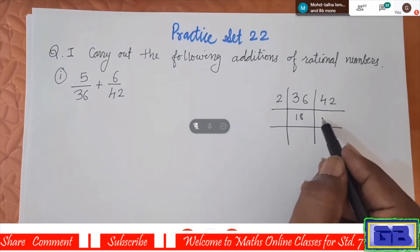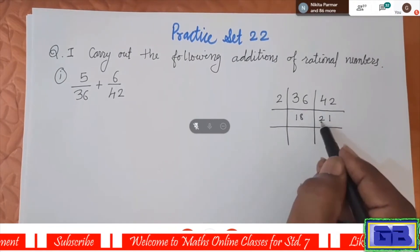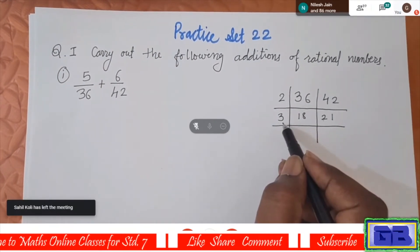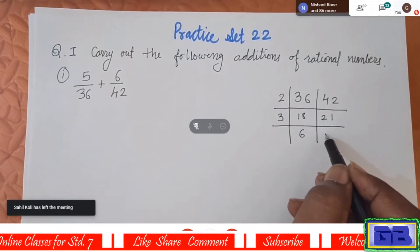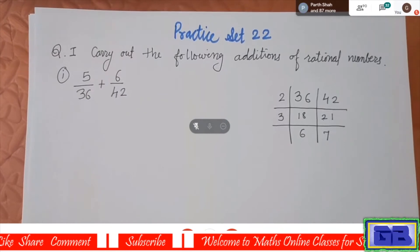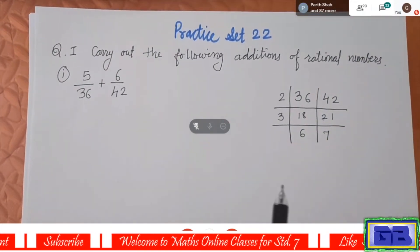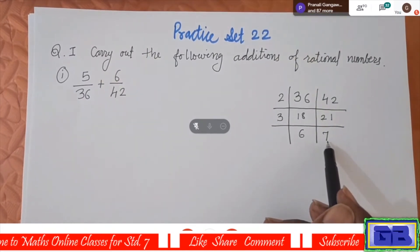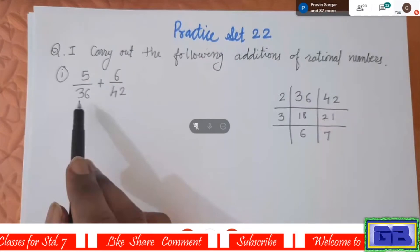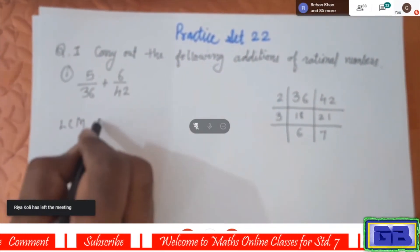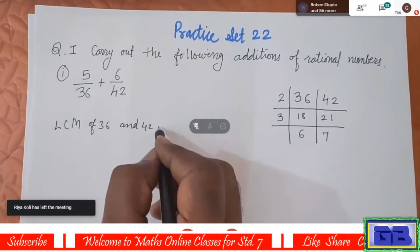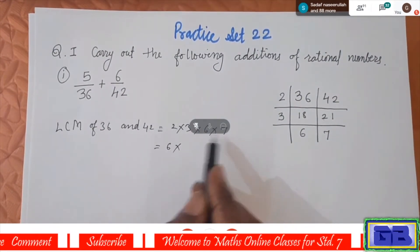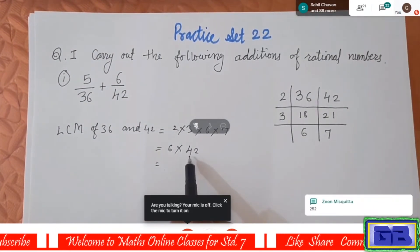To find the factors, first divide both numbers by 2: 36 divided by 2 gives 18, and 42 divided by 2 gives 21. These two numbers are again divisible by 3: 18 divided by 3 gives 6, and 21 divided by 3 gives 7. Further division is not possible as nothing is common. So we multiply 2 × 3 × 6 × 7 to get the LCM of 36 and 42, which equals 252.